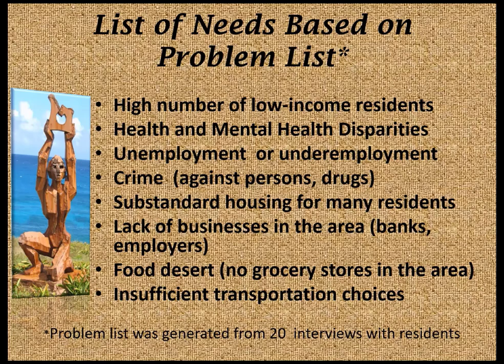Health and mental health disparities were of prominent concern among residents. Also underemployment or unemployment. Elderly residents and some students were concerned about crime — both crime against persons and drug trade in the neighborhood. There was also substandard housing for many residents, a lack of businesses in the area, no banks, no employers located in that area, and essentially a food desert — no grocery stores near the community. There were also complaints about insufficient transportation choices and a poor schedule in the transportation system.